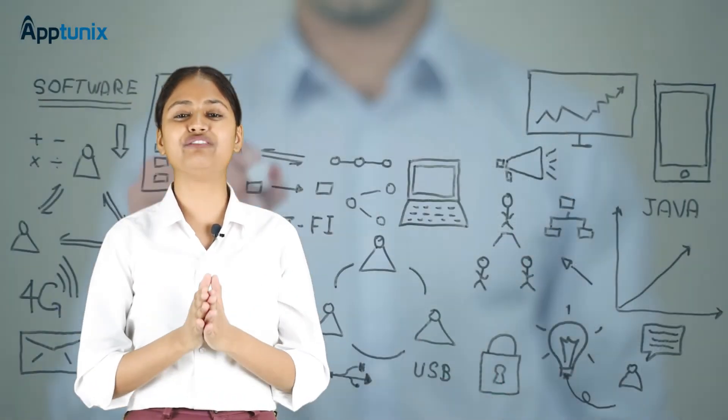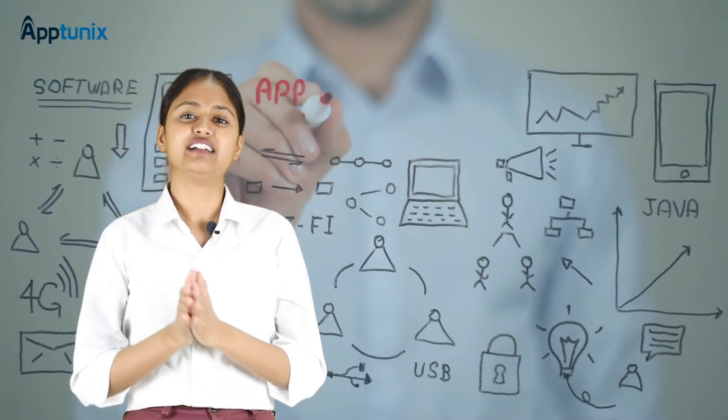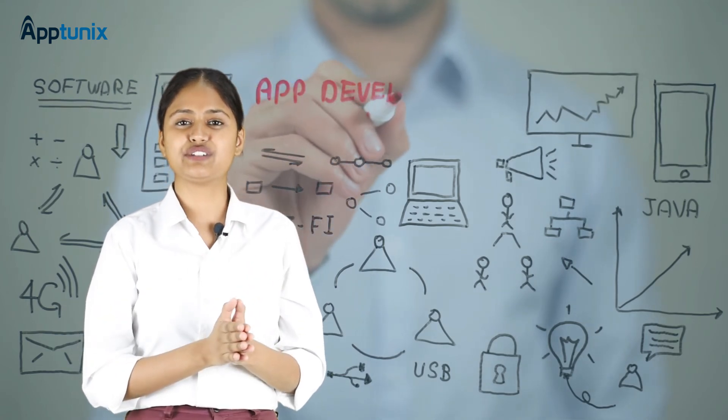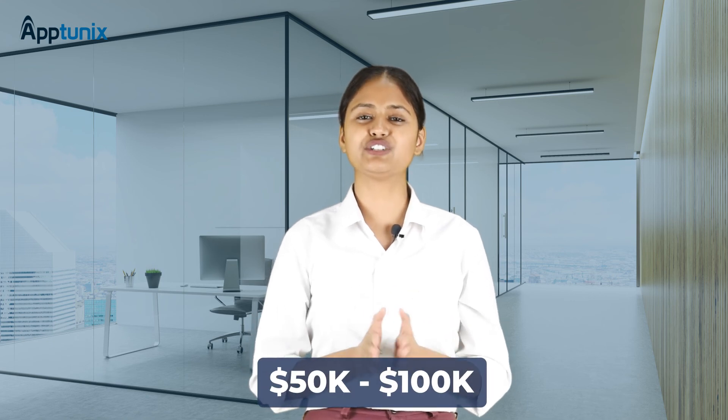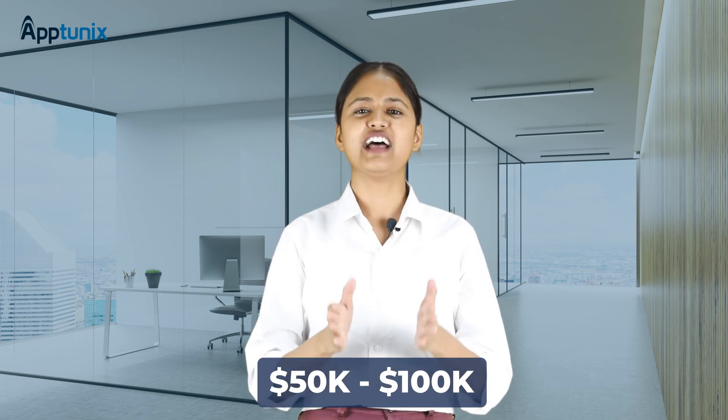And now coming to the most important and interesting question: how much does it cost to build an app like TikTok? As you know, the development cost depends on various factors like design, the time taken to develop, the technologies, functionalities, and many more. With AppTunix, you get the most affordable price range of developing an app like TikTok, that is $50,000 to $100,000.